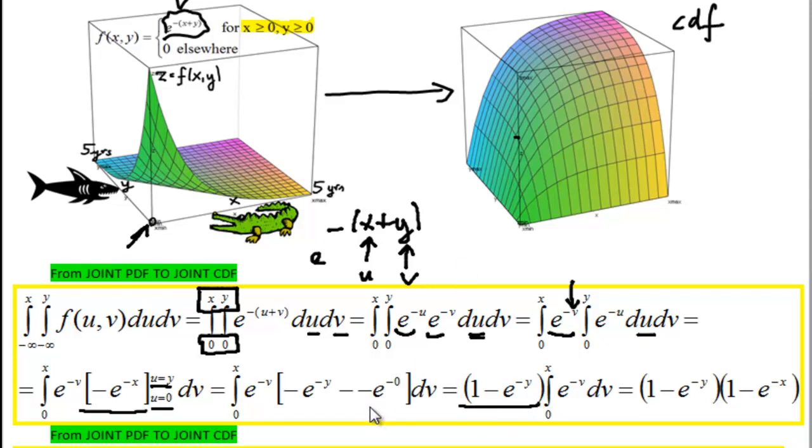Because when we have e to the power of 0, this is just going to be 1, so this whole expression becomes just 1 minus e to the power of minus y. And we do the same thing, this is exactly the same antiderivative that we get out of here, just with the only difference that v will be replaced by x.